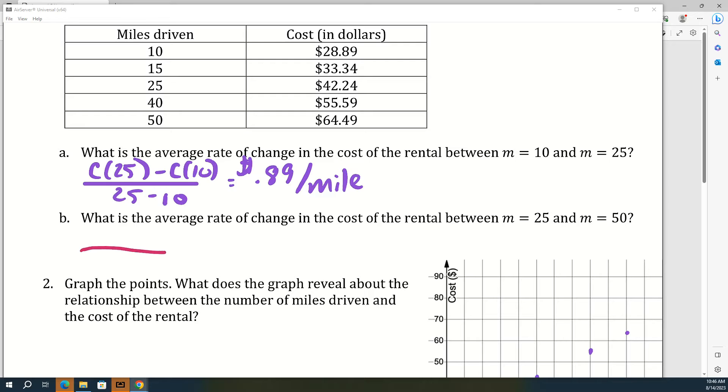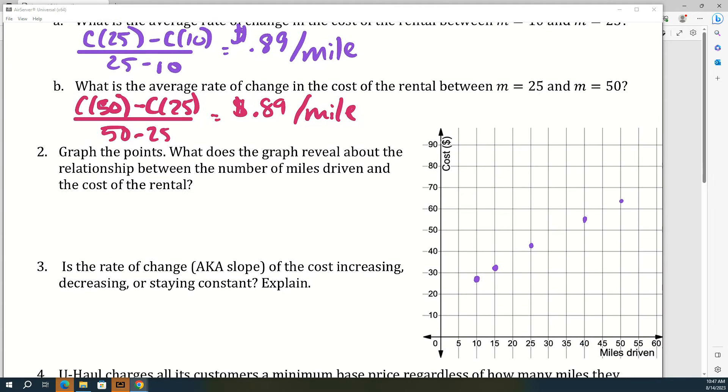Alright, and then b, basically the same thing just with different m values. And then c asks you to graph the points and then talk about what it reveals about the relationship. What kind of relationship is there between the miles driven and the cost? Linear relationship, very good.